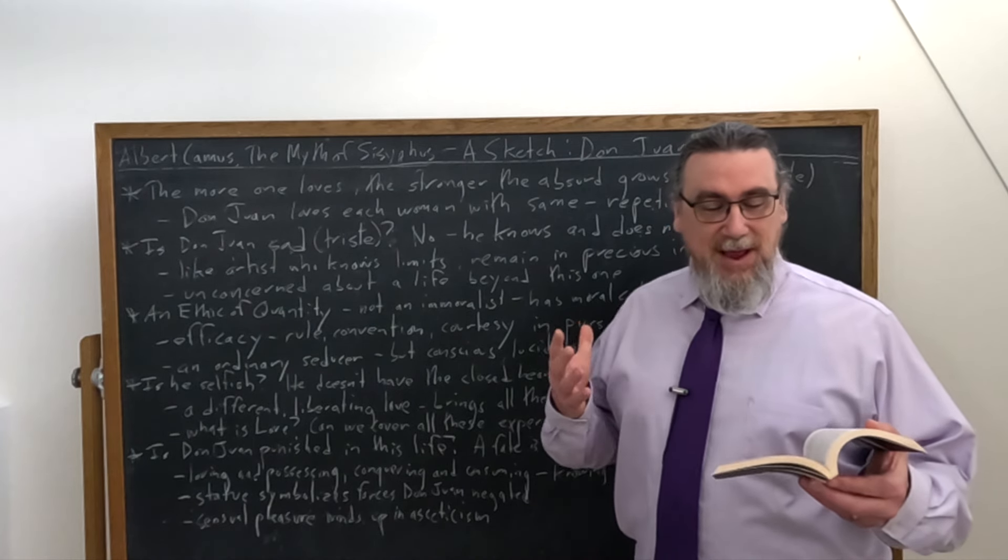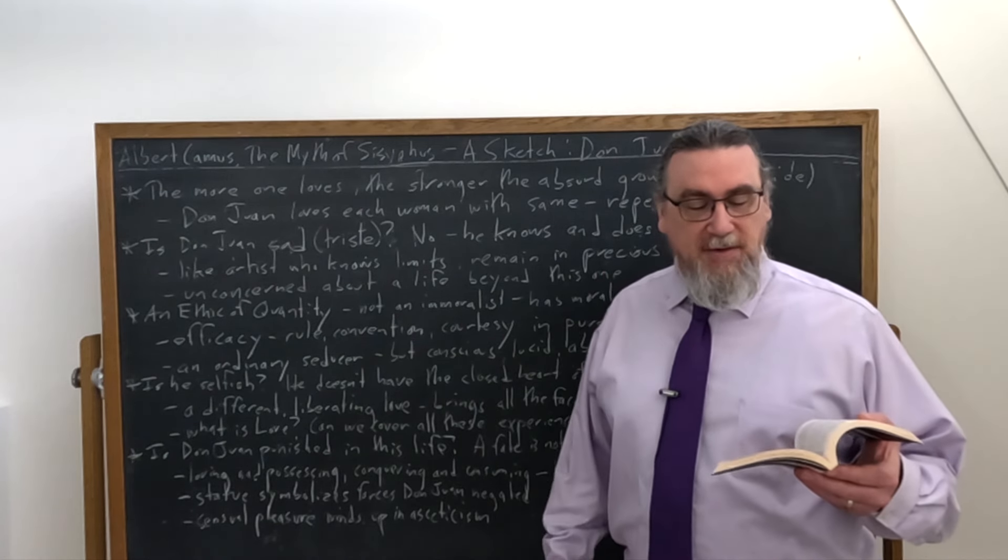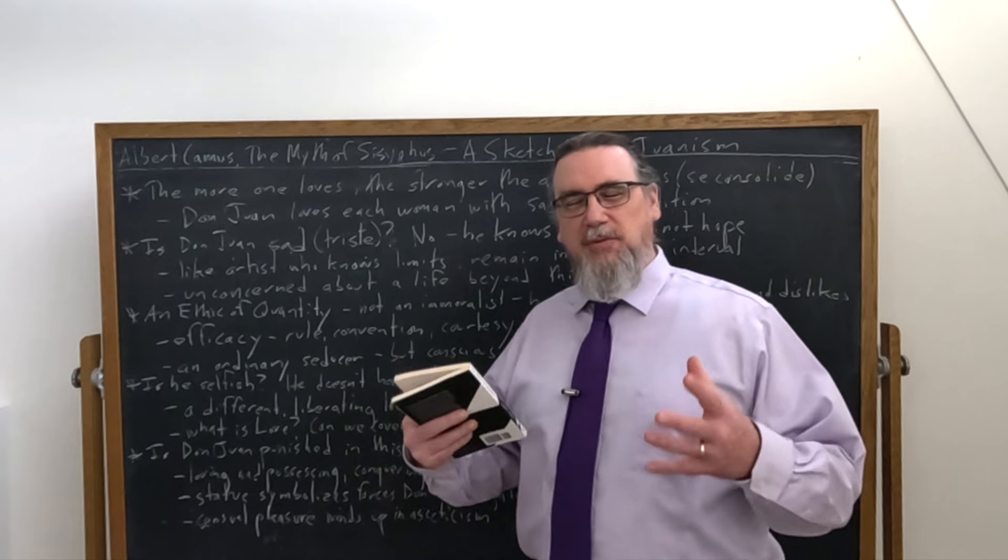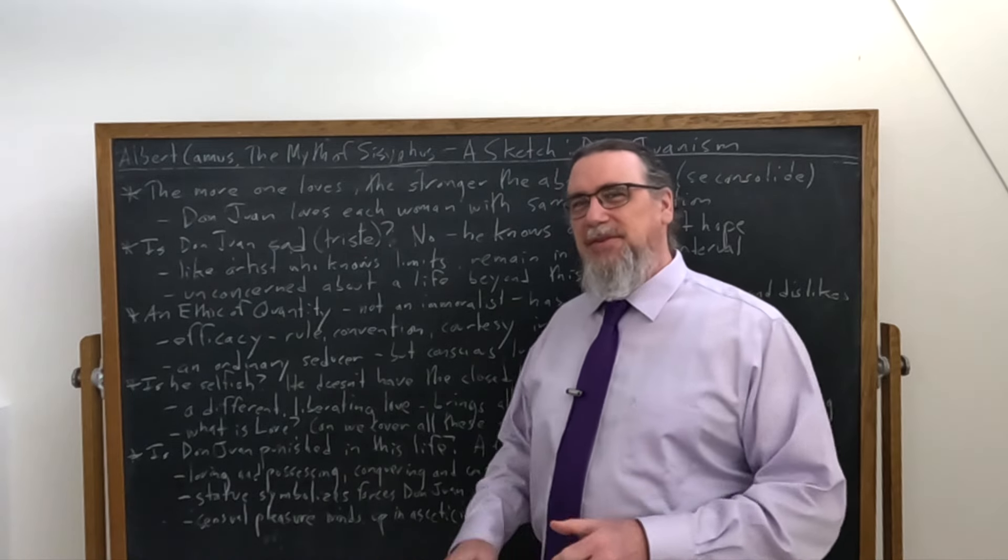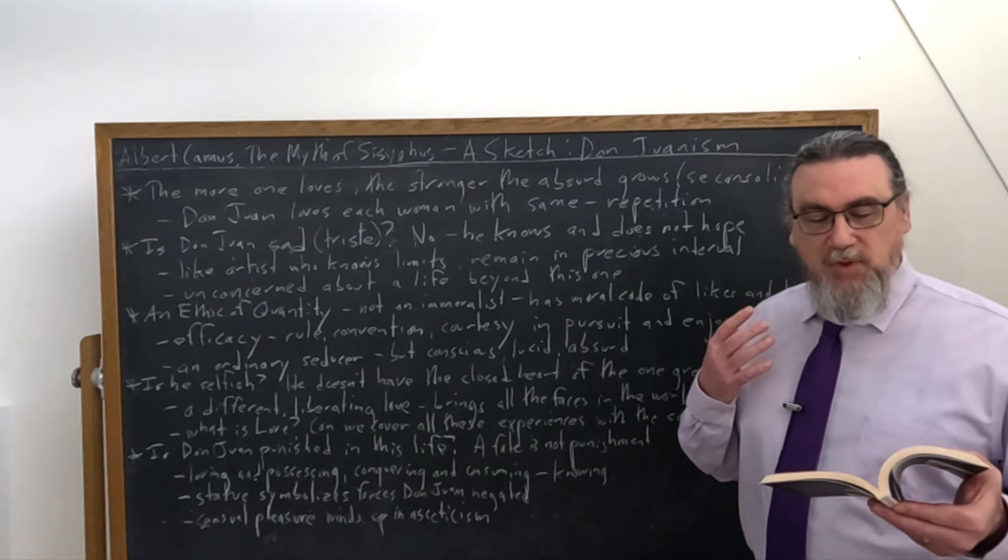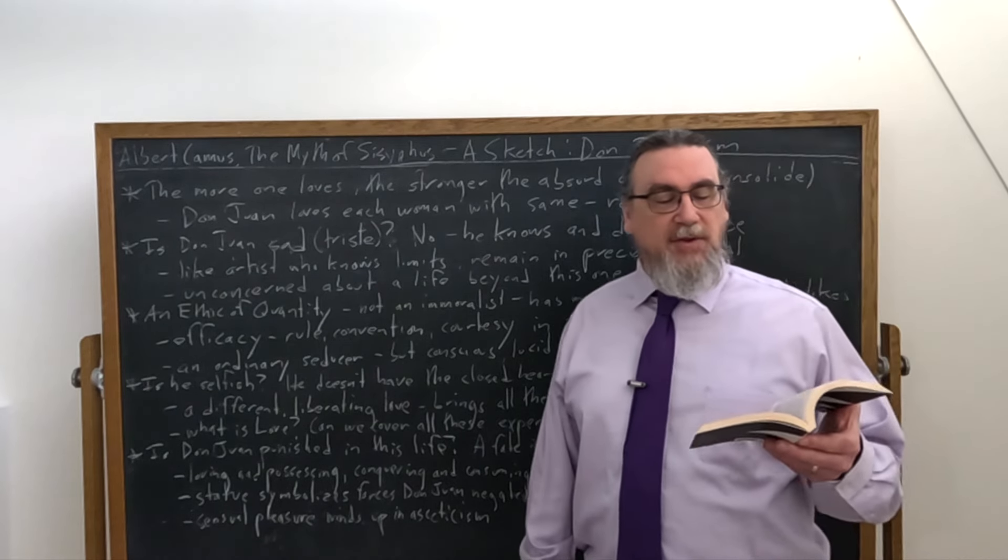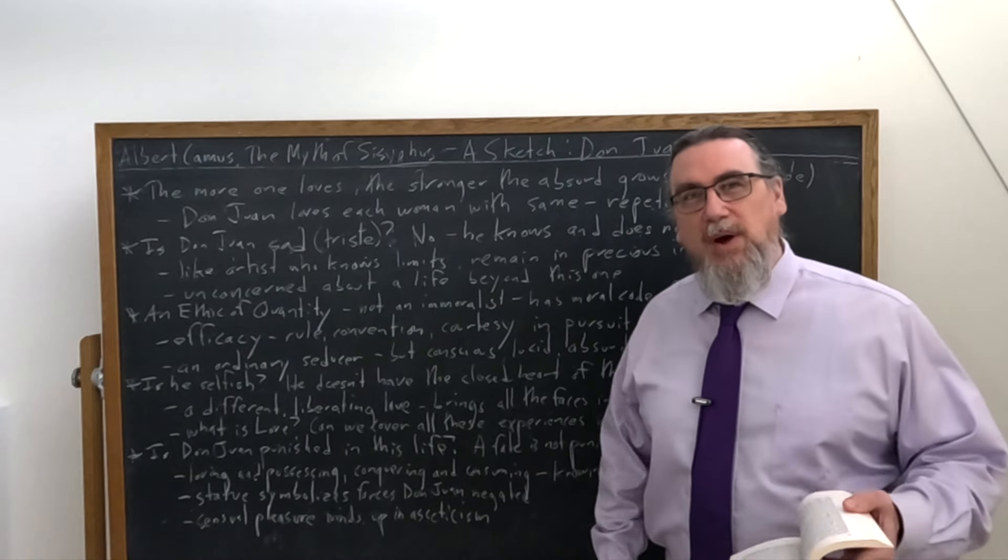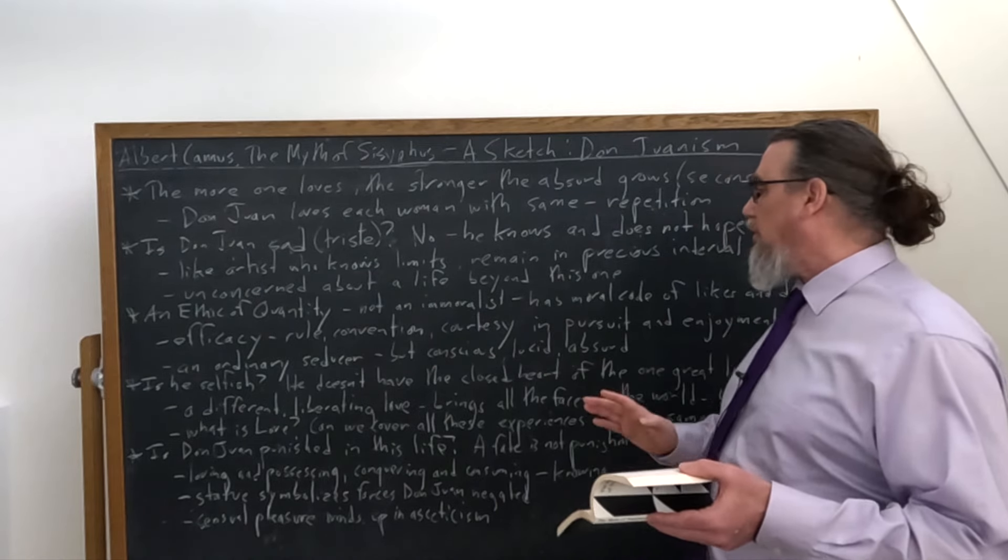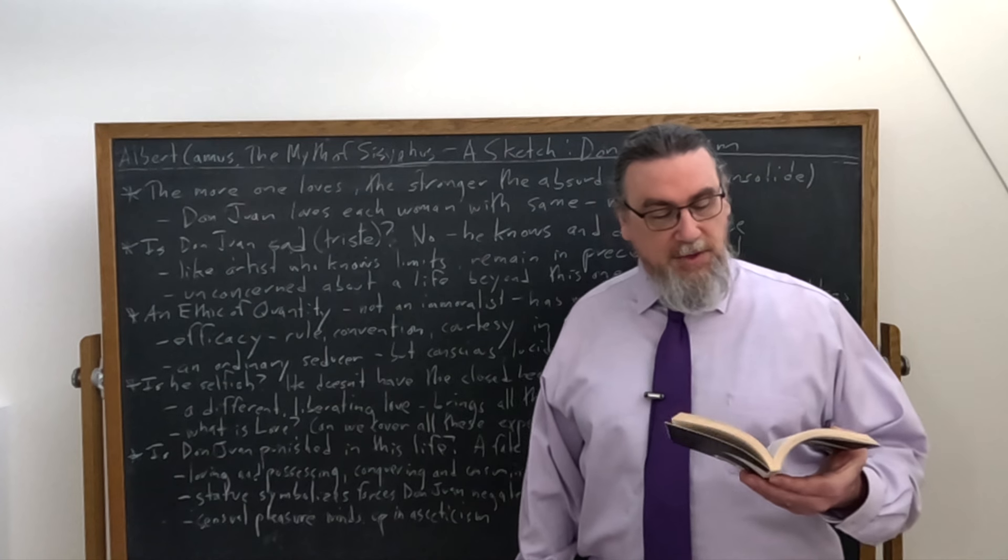So is this moral or is this aesthetic? We could ask those coming back to this. He talks about efficacy. The only thing that matters is efficacy. What is the use of complicating the passwords that have stood the test? What are the passwords? The formulas for seduction. But in this, there's something revealed. He talks about they are the rule, the convention, and the courtesy. He says, no one, neither the woman nor the man listens to them, to the formulas, but rather to the voice that pronounces them. That voice, Don Juan's voice, is what is giving a rule, a convention, a courtesy in pursuit and enjoyment of the relations that he's having with these women.